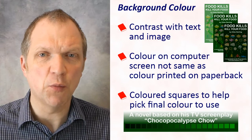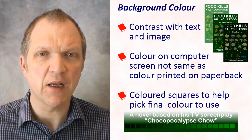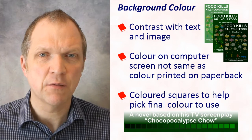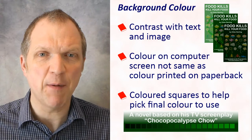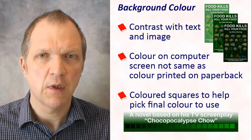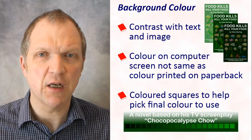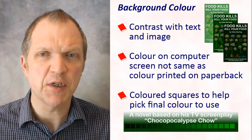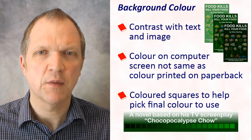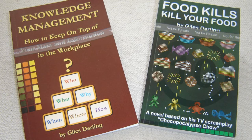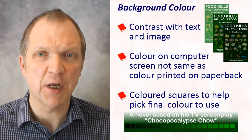When selecting the background colour of your book's cover, try to pick colours that contrast with the text and the image. However, the colour you choose on your computer screen may not match the colour of the paperback when it's printed in real life. To help me pick just the right colours or colour combinations, I sometimes include a block of different potential colours when printing the preliminary proofread books. Here are some examples. This grid of coloured squares enables me to confirm which colour to use on the final version of the book's cover, both for how it appears on my computer screen and for how it appears when printed in real life.